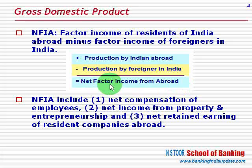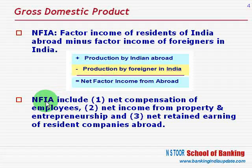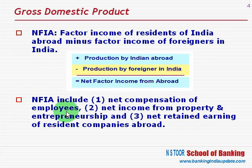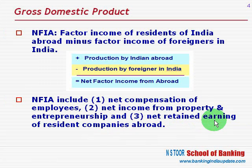When we say NFIA — production by Indians versus production by foreigners — we mean net compensation of employees, net income from property and entrepreneurship, and net retained earnings of resident companies abroad. These are the components that make up net factor income from abroad.